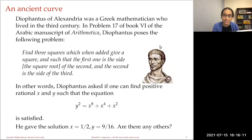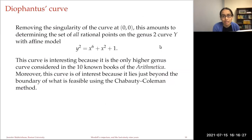Diophantus is asking if we can find positive rational x and y such that y² = x⁸ + x⁴ + x² is satisfied. Diophantus provided a solution, but from our point of view we'd like to determine all rational points. Removing the singularity at (0,0), this becomes a question about the rational points on the genus two curve with affine model y² = x⁶ + x² + 1. This curve is particularly interesting as it's the only higher genus curve considered in the ten known books of the Arithmetica.